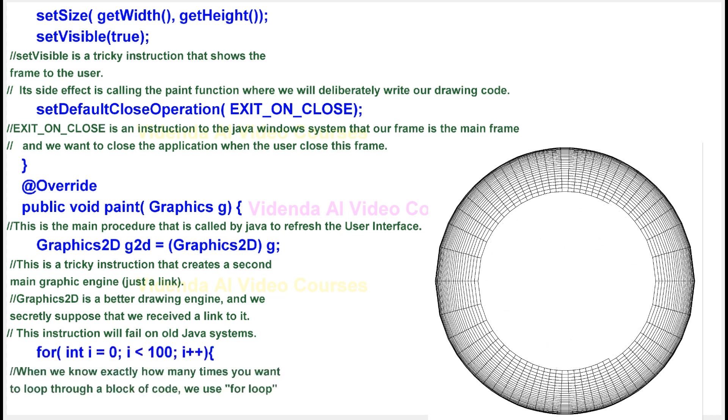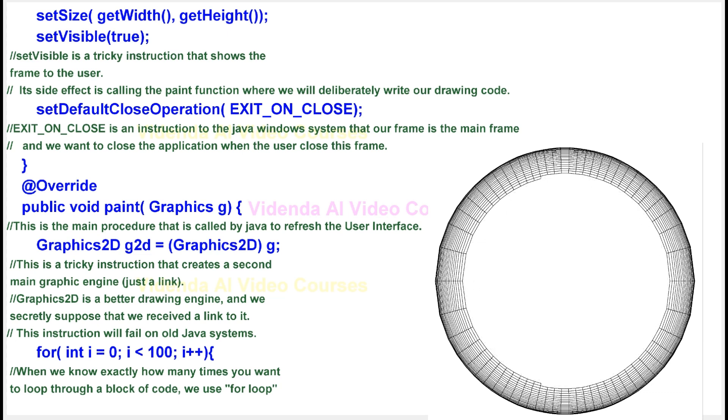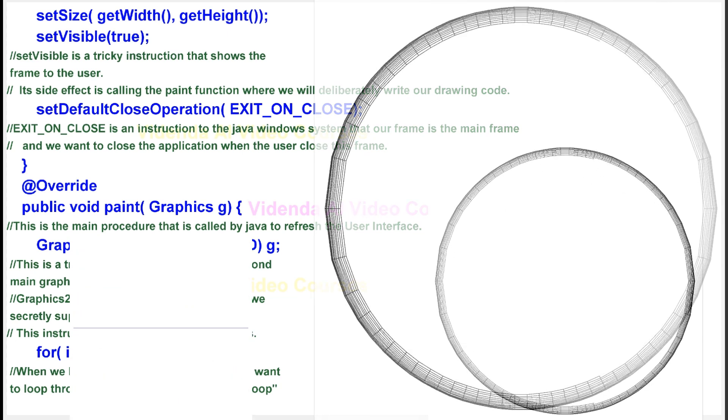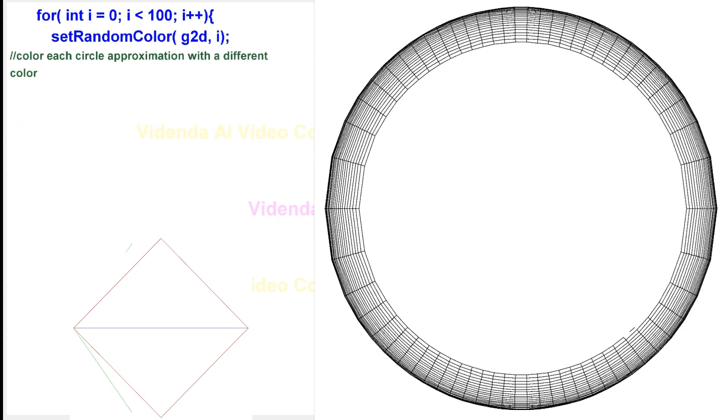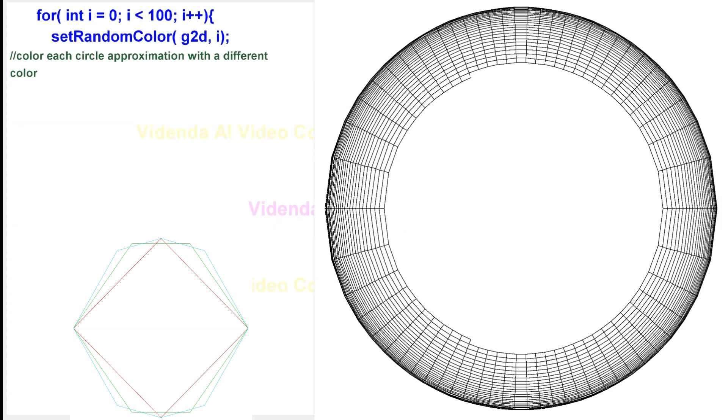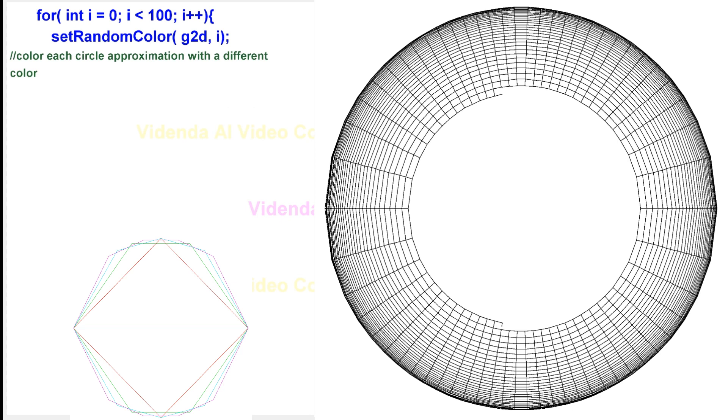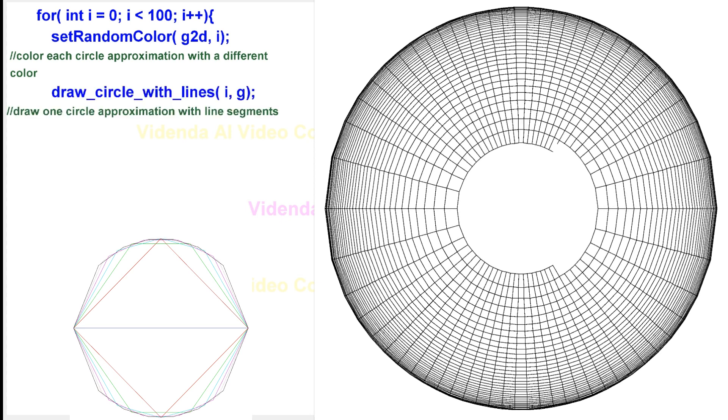When we know exactly how many times you want to loop through a block of code, we use for loop. Color each circle approximation with a different color. Draw one circle approximation with line segments. Use a prime number for better rainbow results.